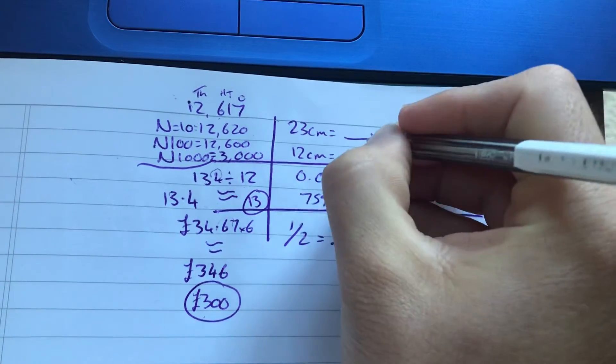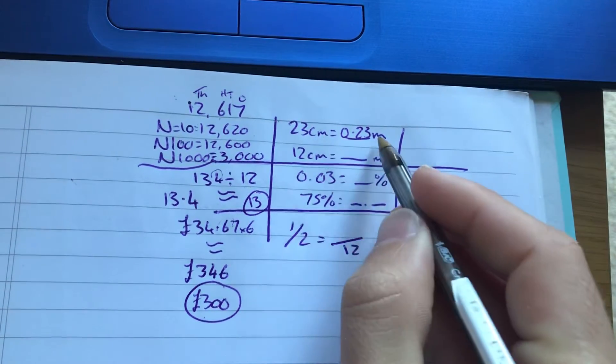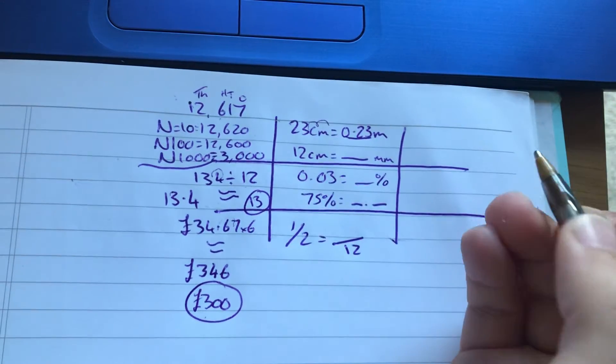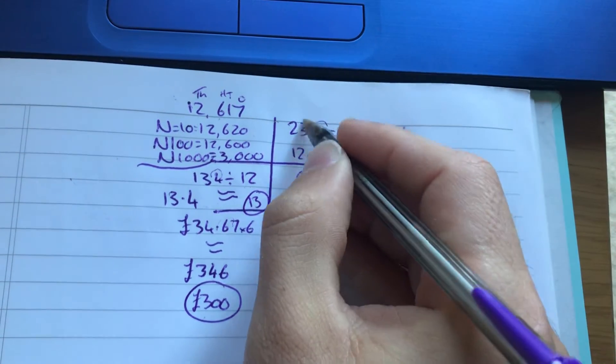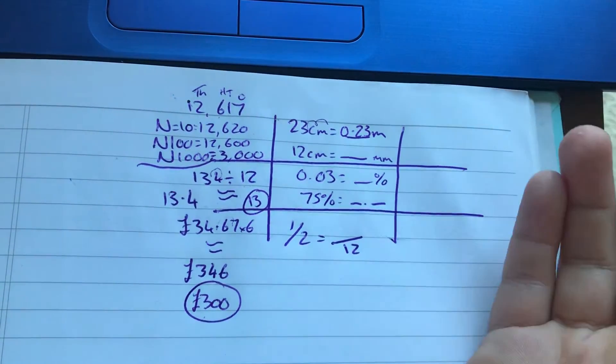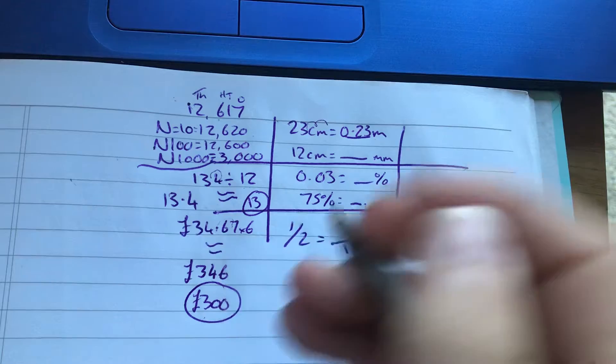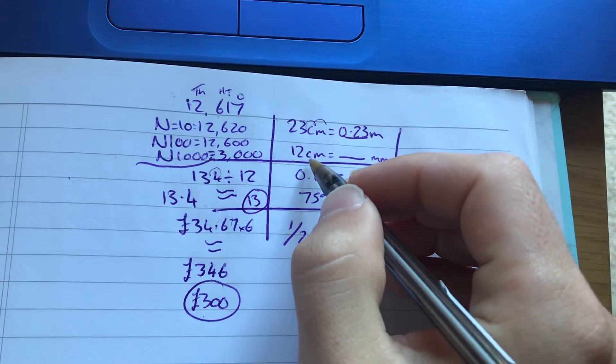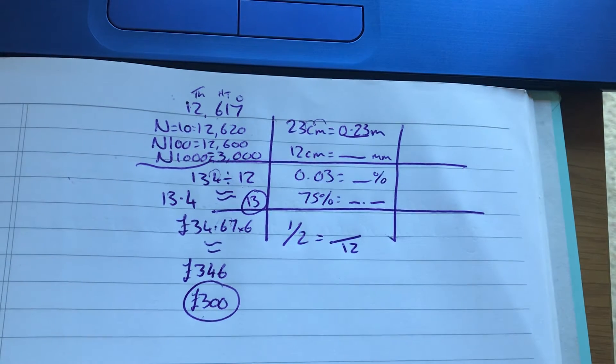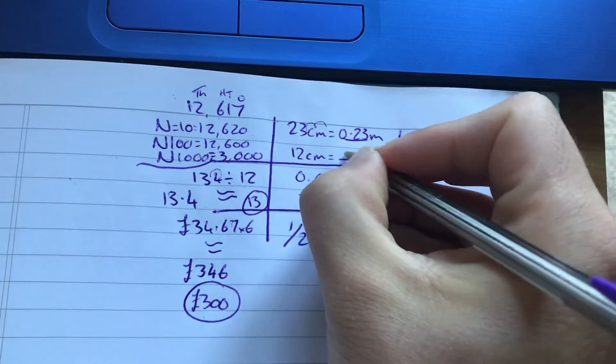23 centimetres, well, that's going to be 0.23 metres. Because we're thinking, how many centimetres in a metre? We know there's 100 centimetres in a metre. We need to do something with 100. We're either going to multiply, which is going to make it 2,300, or we're going to divide, which makes it 0.23. Common sense of maths, 0.23 metres. 12 centimetres into millimetres. Again, there are 10 millimetres in one centimetre. So you've either got to times by 10 and make it 120, or divide, which is 1.2. Well, 12 centimetres can't be 1.2 millimetres, because millimetres are smaller than centimetres. So it's got to be 120.